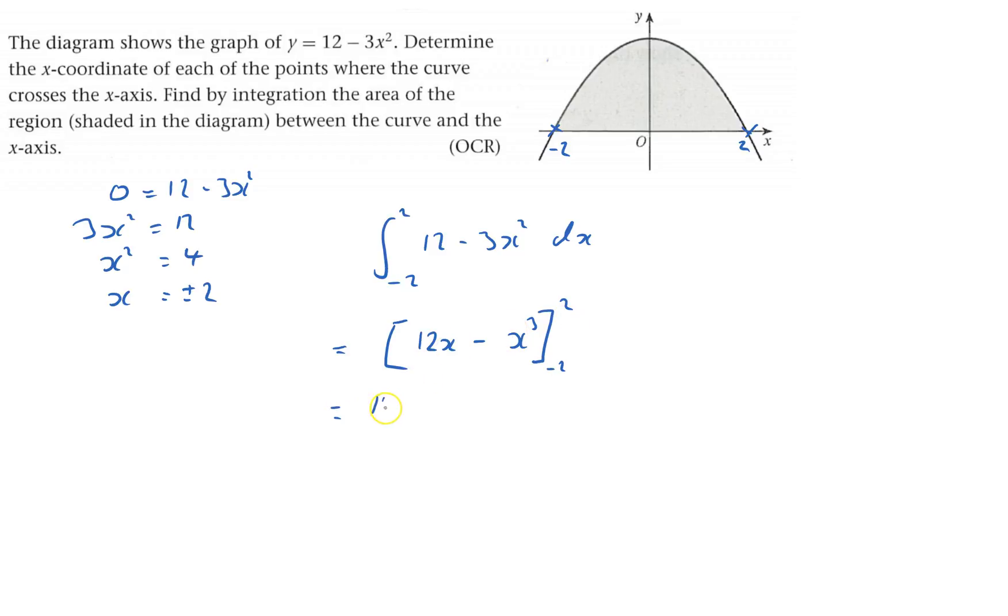Substitute in 2 to start with. 12 times 2, minus, and then 2 cubed. And then minus, I can put in brackets, 12 times negative 2, minus negative 2 cubed.